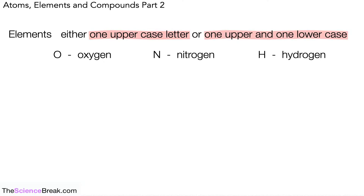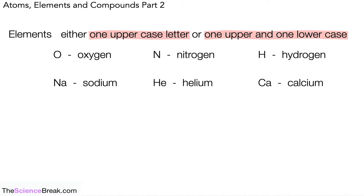Some elements have one uppercase and one lowercase letter. For example, sodium is Na — not the most logical letters, but capital N and lowercase a. Helium is He — uppercase H and lowercase e. Uppercase H is already taken by hydrogen, so we can't use it alone for helium. Calcium is Ca — uppercase C and lowercase a.